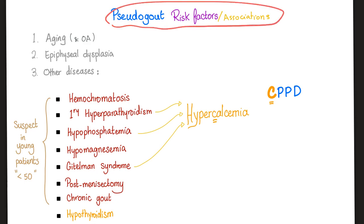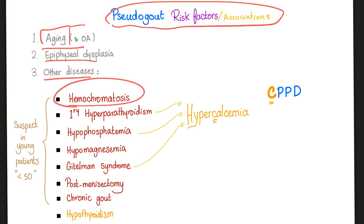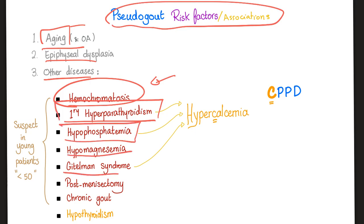Pseudogout risk factors and associations: aging — many elderly patients also have osteoarthritis, so they can come together. Metabolic causes include hemochromatosis, primary hyperparathyroidism, hypophosphatemia, hypomagnesemia, Gitelman syndrome, chronic gout, and hyperthyroidism. Post-meniscectomy and epiphyseal dysplasia are also associations. Notice that primary hyperparathyroidism, hypophosphatemia, and Gitelman syndrome are all associated with hypercalcemia — which makes sense because the crystal is calcium pyrophosphate, so hypercalcemia causes precipitation in the joint.